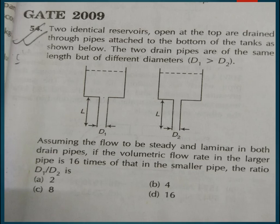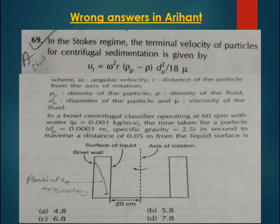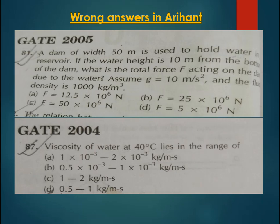Question 69, asked in GATE 2007: the answer given is D in Arihant, but in my opinion the answer should be C. Just check it out because I am not fully confident — I have forgotten many concepts. Question 81, asked in GATE 2005: the correct answer is B while the answer given is C, which is wrong. The reason is you cannot apply the total force on the drum as rho×g×H×area because you have to integrate, since the pressure is varying.